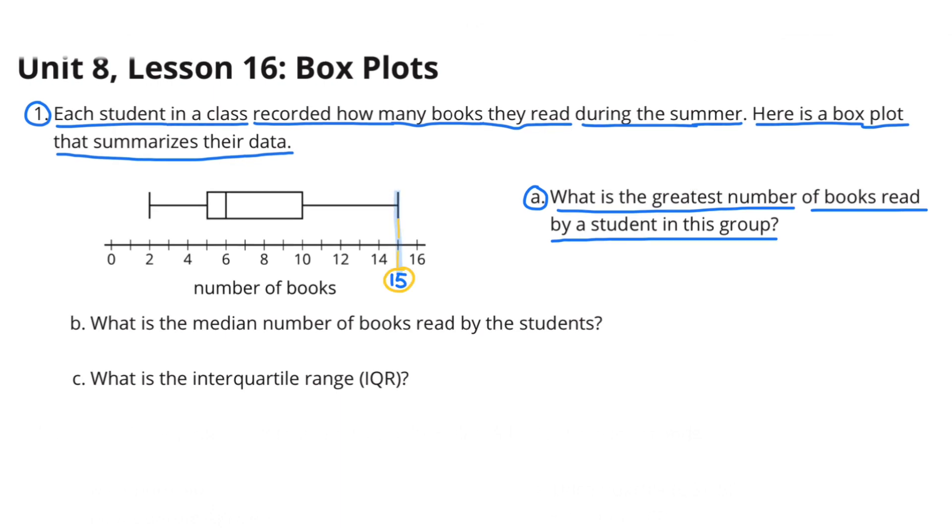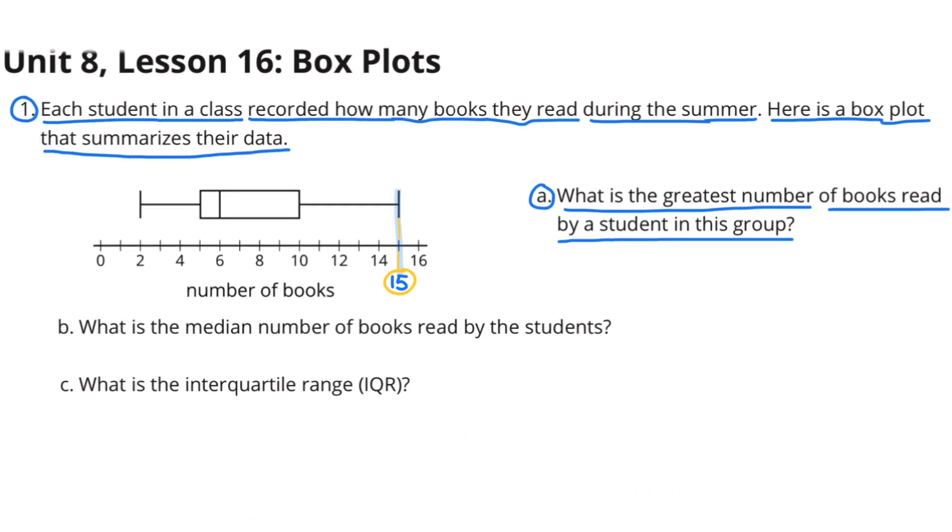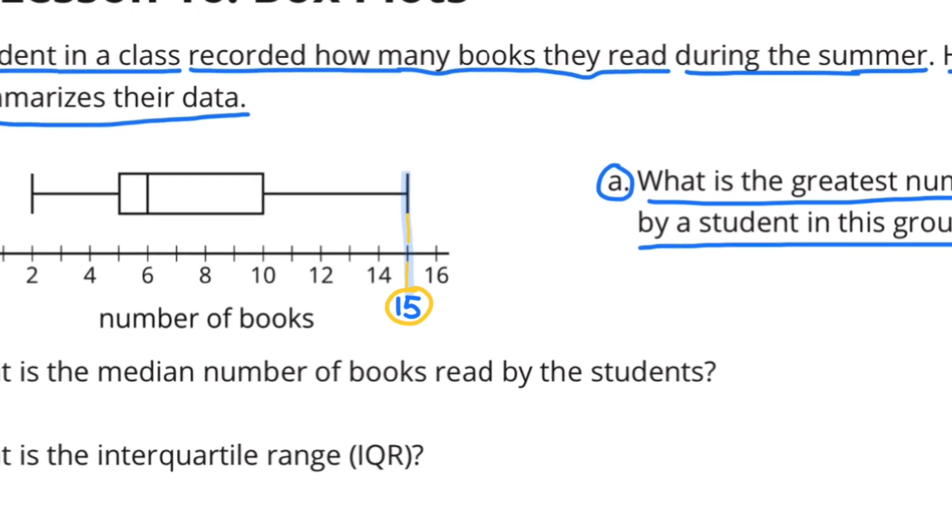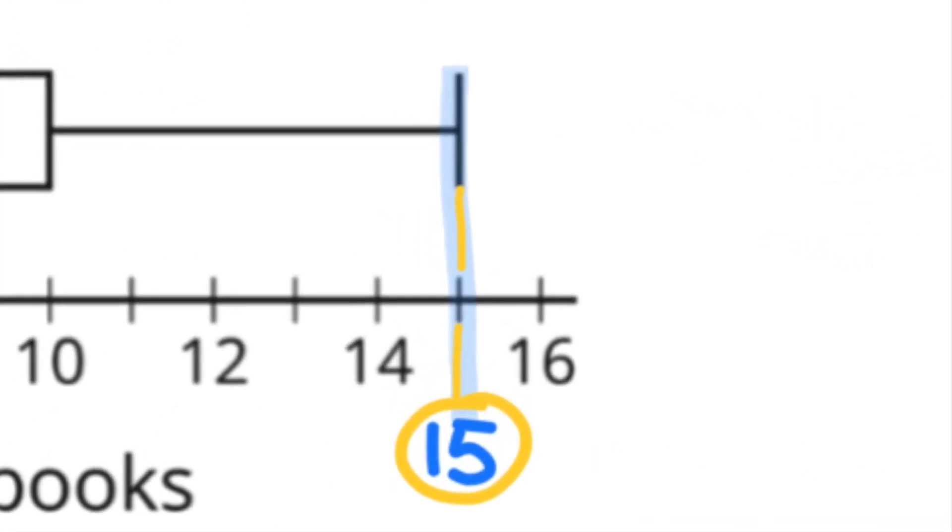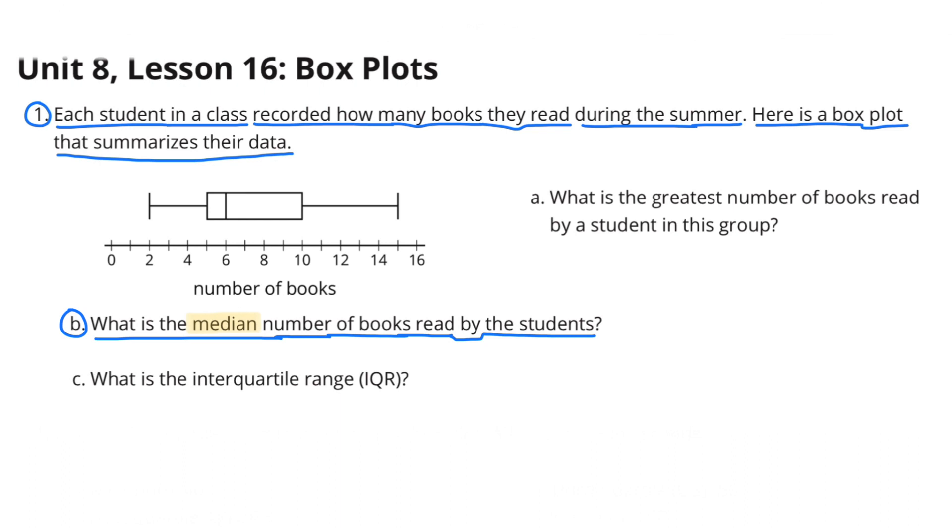According to the values in this box plot, the greatest number of books read by a student during the summer was 15. Part B: What is the median number of books read by the students?